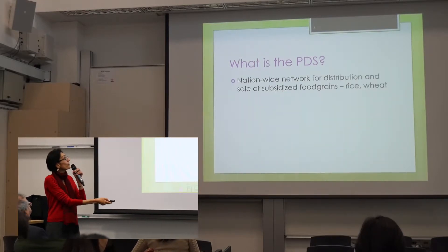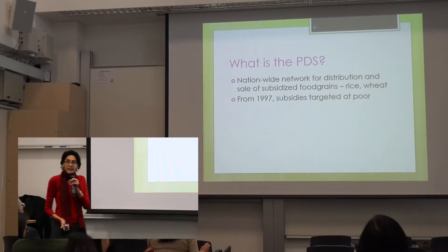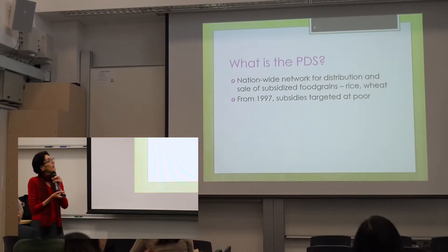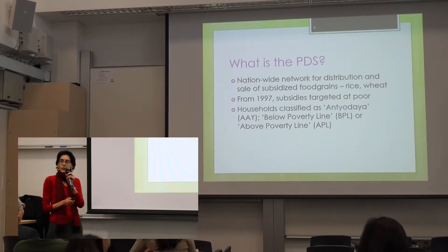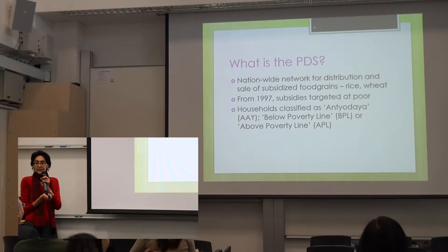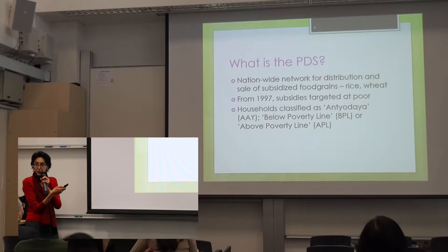For those of you who are unfamiliar with India, the PDS is the Public Distribution System. It sells subsidized cereals, especially rice and wheat, to poor households. Originally it was a universal system, and from 1997 onwards the subsidies have been explicitly targeted at the poor. Households are therefore classified as Antyodaya, which is the poorest of the poor, below poverty line, or above poverty line.